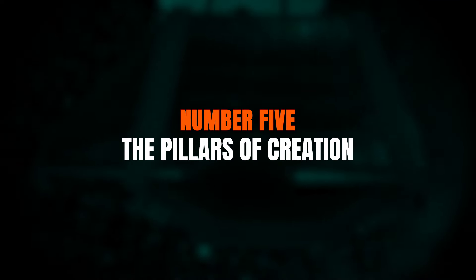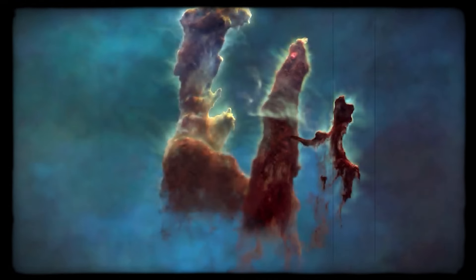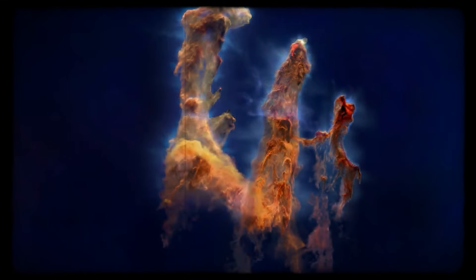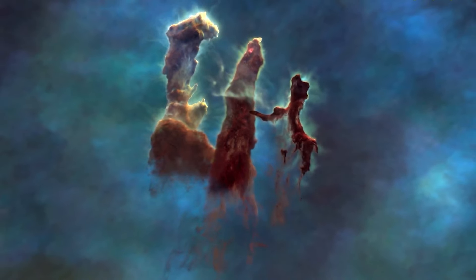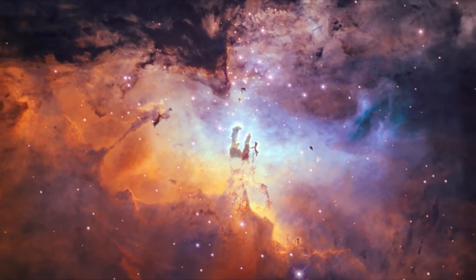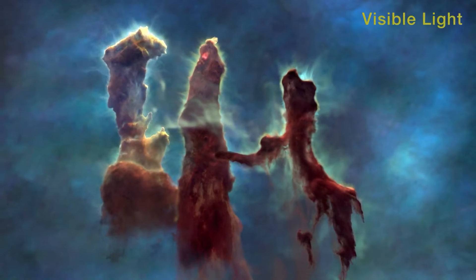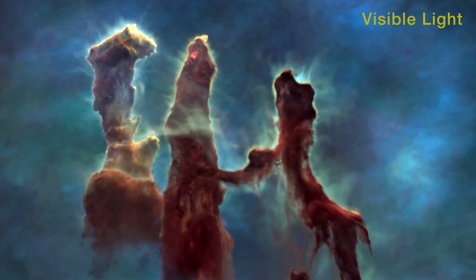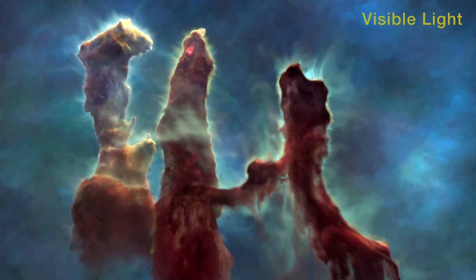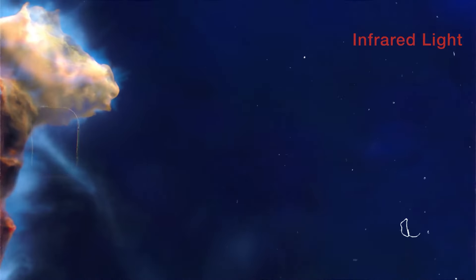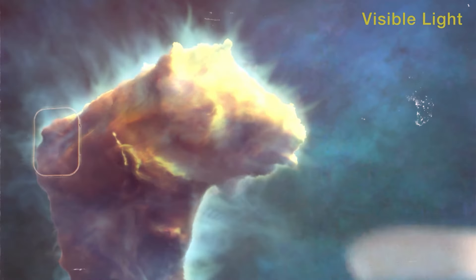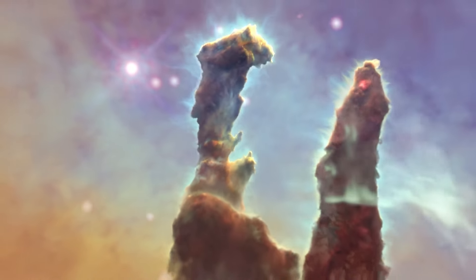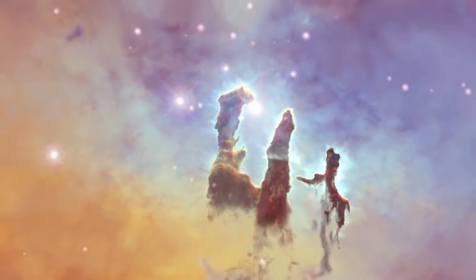Number five, the Pillars of Creation. The Pillars of Creation received a jaw-dropping 3D makeover thanks to new data from the James Webb Space Telescope. This new mosaic, showcased in a NASA video, highlighted the major differences between the two telescopes. Space telescopes typically specialize in certain wavelengths of light. While Hubble captures primarily visible light, James Webb is more sensitive to infrared light. With this new visualization, everyone can experience the rich, captivating landscape of the Pillars in a new way.